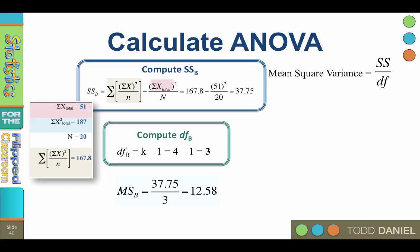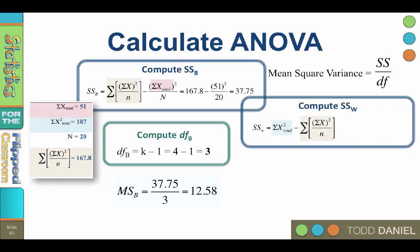Good. Now, we just need to do the same thing to figure out our variance within. The sum of squares within uses the sum of x squared total in the blue and subtracts the total variance units in the tan. Plug in these values, calculate, the answer is 19.20.